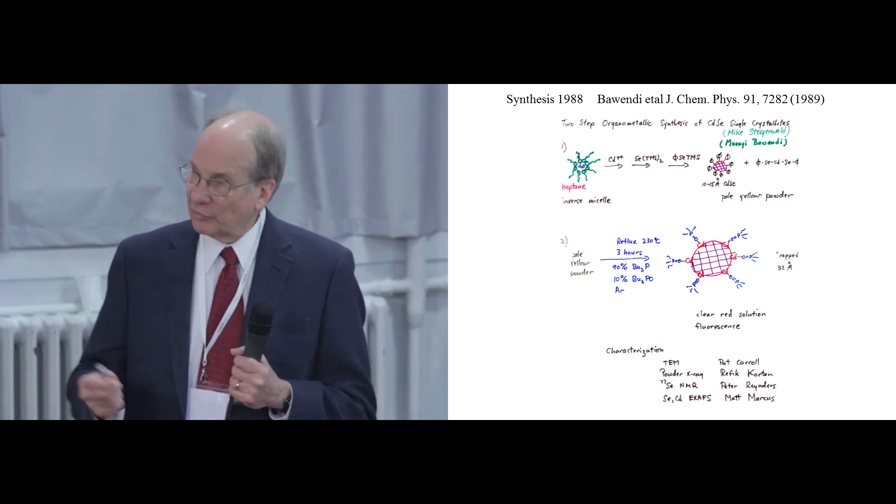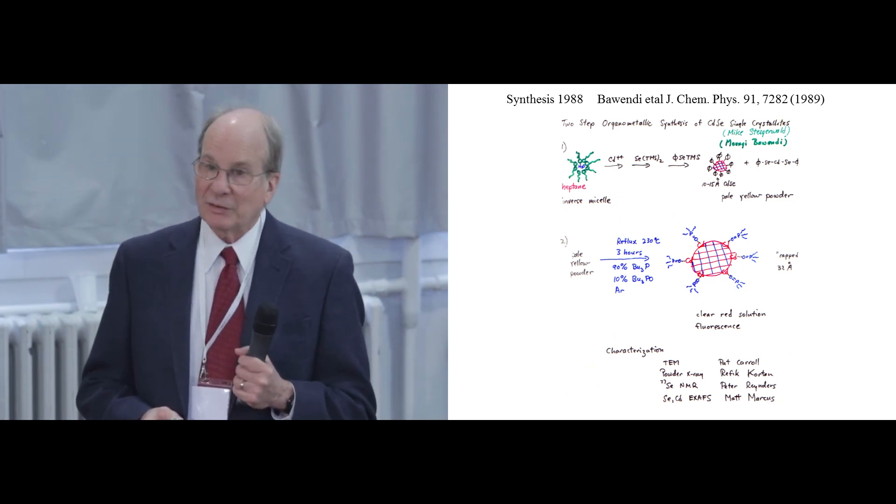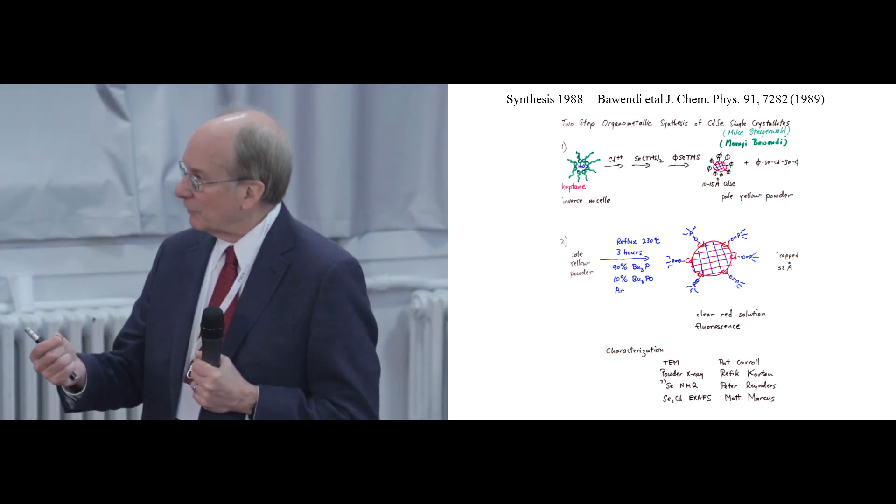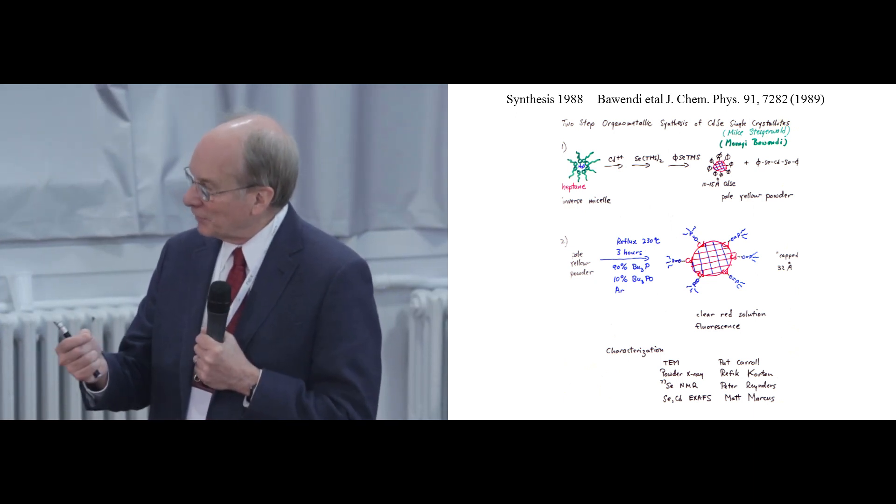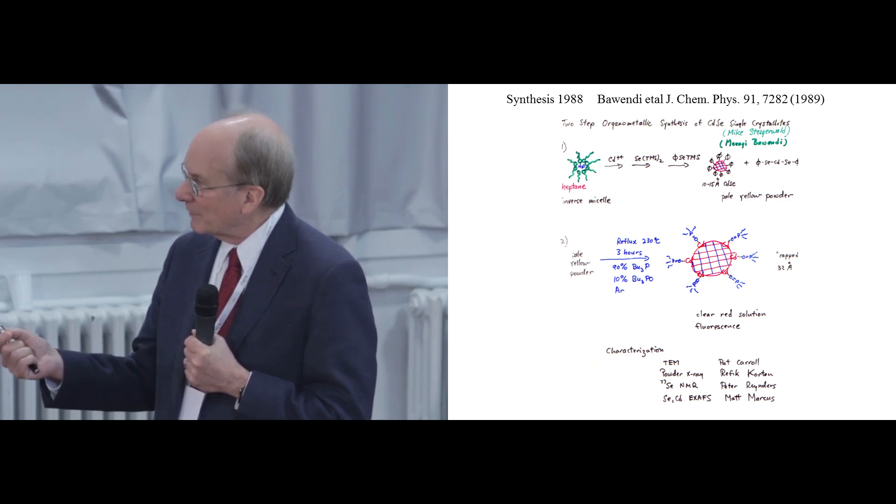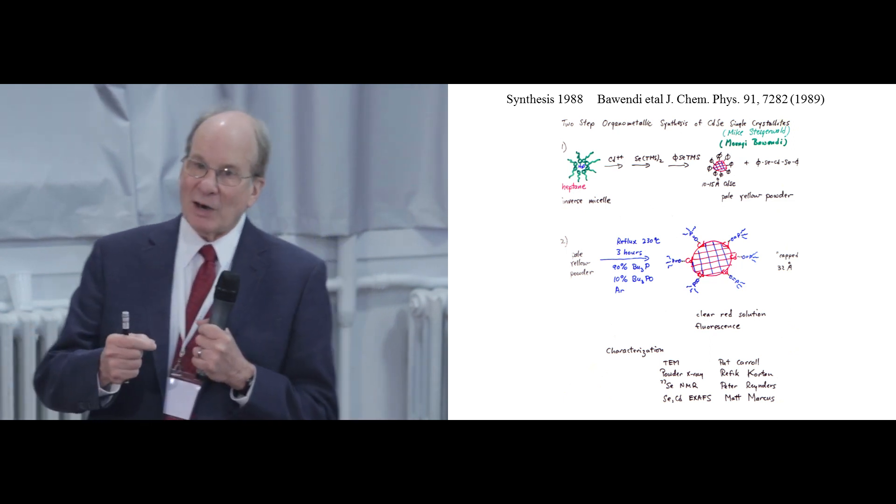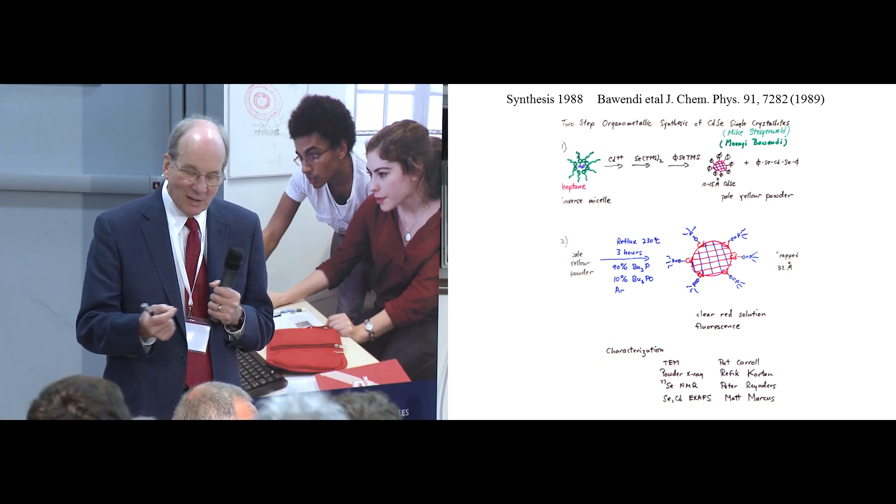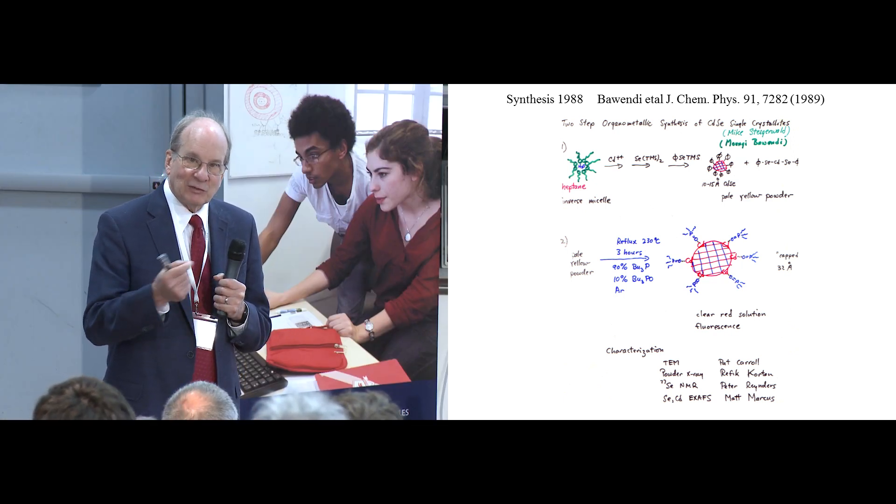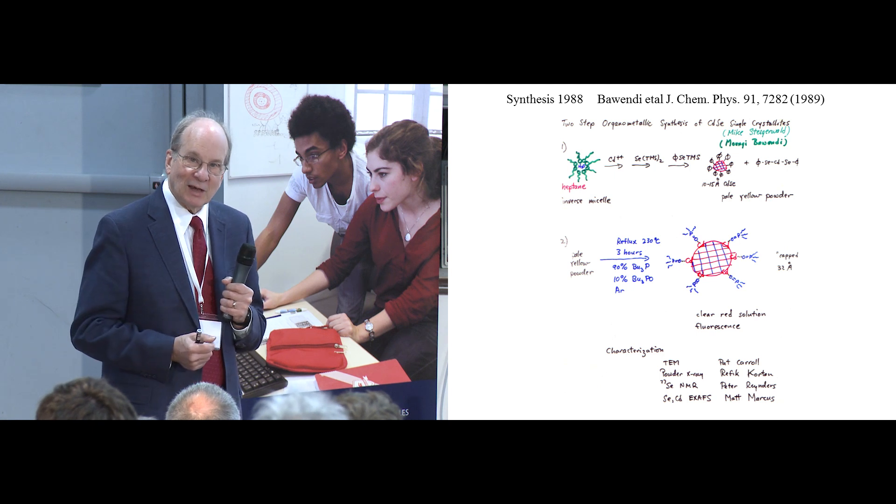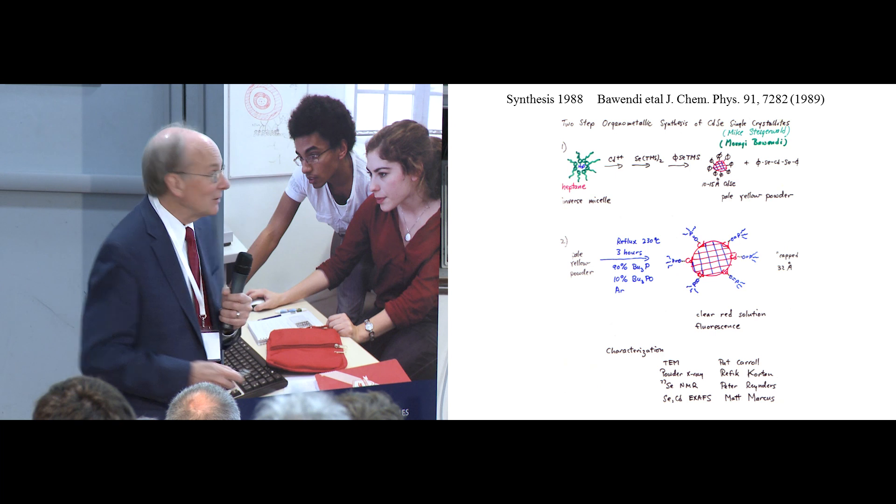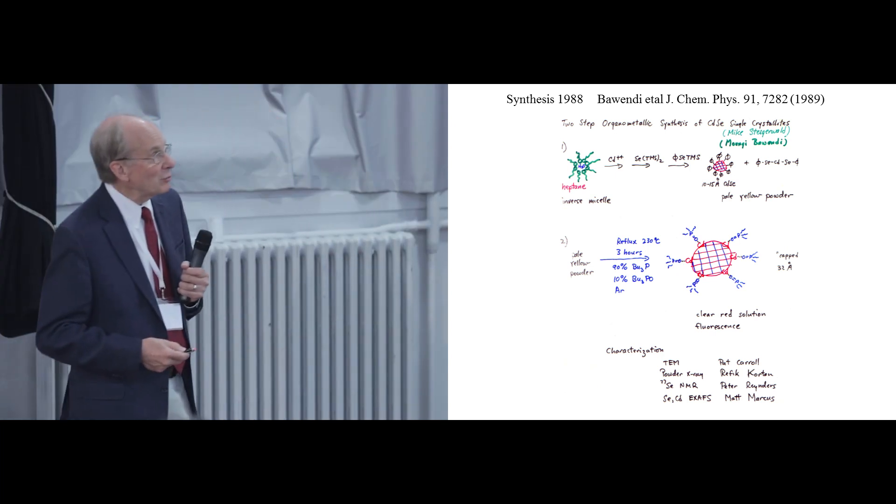And it was not reproducible. We couldn't get it to dissolve in tributylphosphine. And one bottle of tributylphosphine would work and the next bottle would not work. And the reason was that one bottle was partially oxidized and the next bottle was not partially oxidized. So Mike suggested, let's just mix in 10% oxide or 20% oxide. That worked like a charm. We could dissolve these things really, really great at that point.